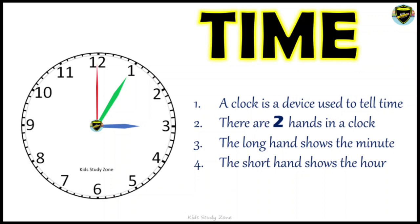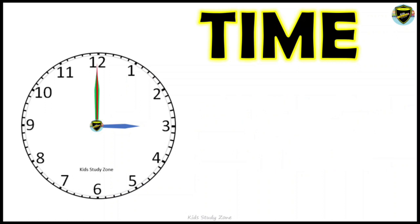As you can see in this picture of a clock, I have highlighted the long hand with green color — that is the minute hand. The short hand, highlighted in blue, is the hour hand. You can also see one more hand — the red one — which tells us about the seconds.